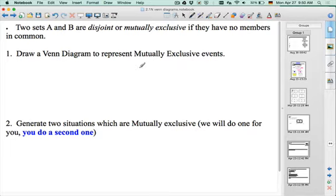We have two sets A and B are disjoint or mutually exclusive if they have no members in common. The example I used in day one when I talked to my class is gender. Male, female. You won't be one or the other. Student, teacher. Those are disjoint sets. You will have no members in common.